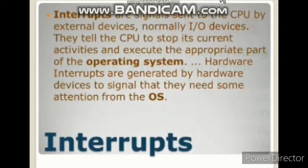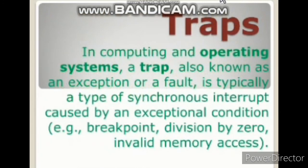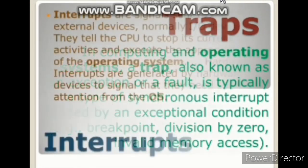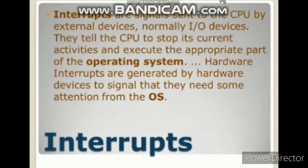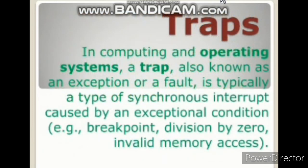In the trap case, control simply goes to the trap service routine and the program is terminated. Because after providing service to the trap, we cannot resume that program — it doesn't need to execute. So simply that program will be terminated. This was the concept about the interrupt and the trap, and we will be discussing these two topics in more detail in our next videos.